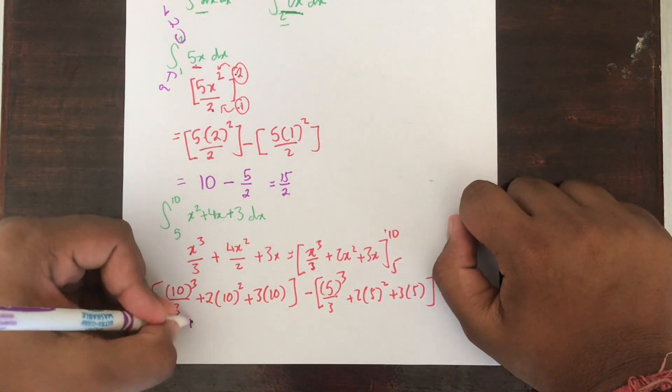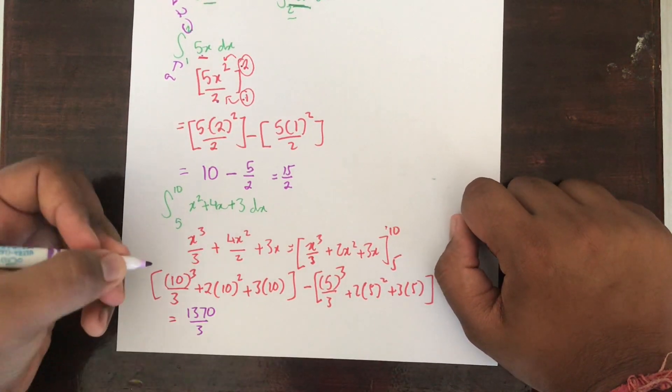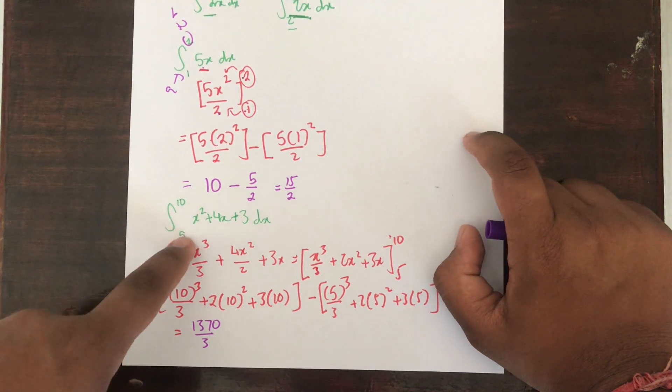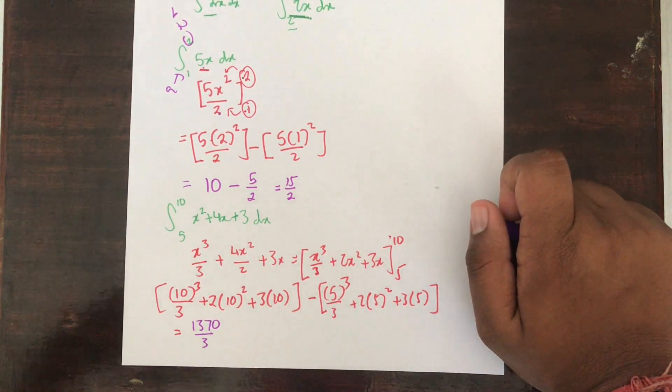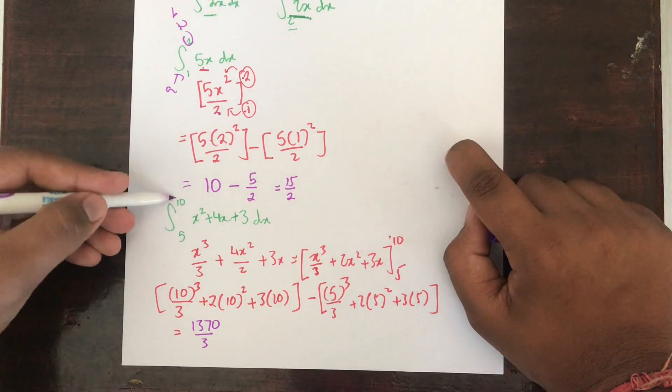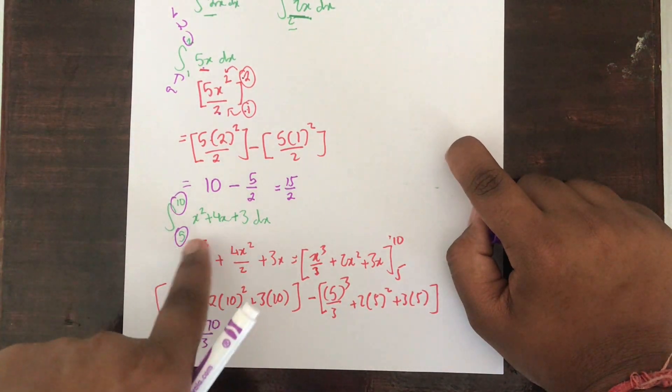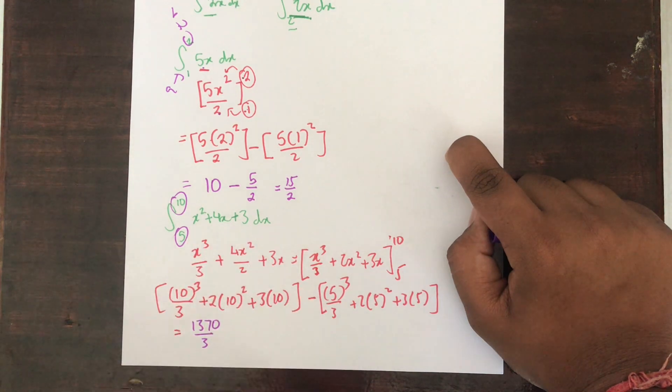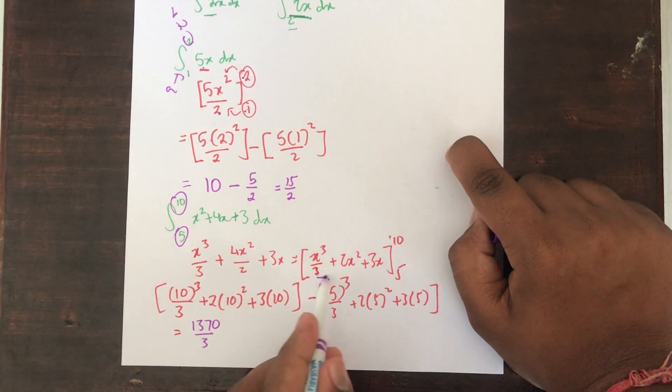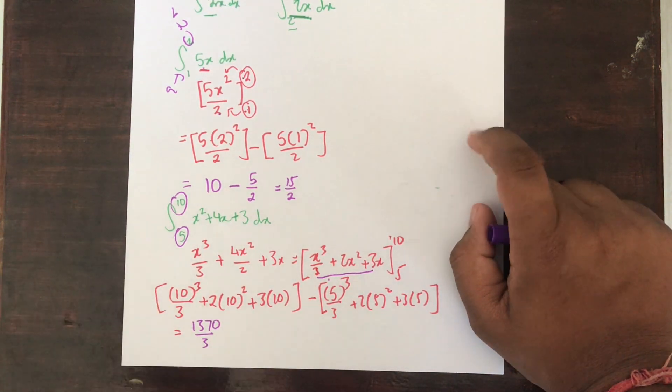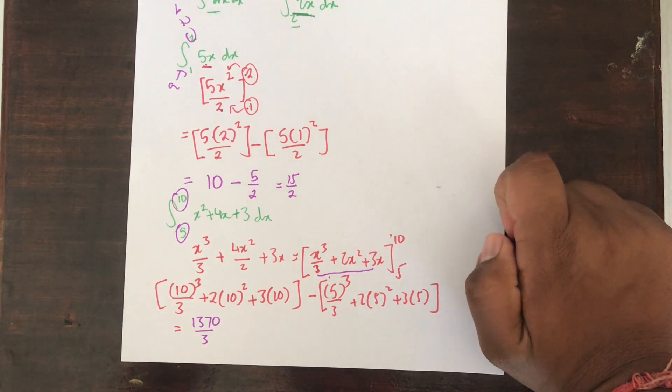I use my calculator to solve this and the value you get is 1370 divided by 3. So the answer to this equals 1370 divided by 3. Remember the plus C won't be here because you are given limits. If we were not given limits, the answer would be the integral of this only, which is actually this plus C. So always take into account the limits.